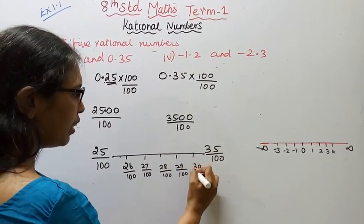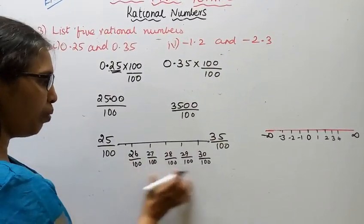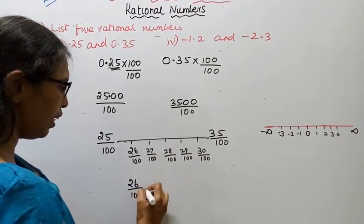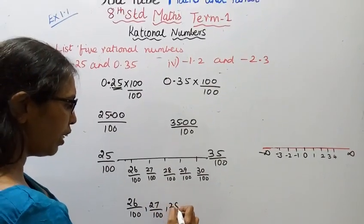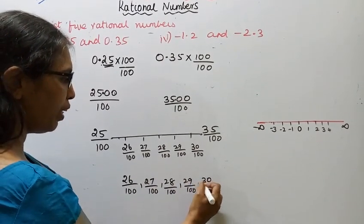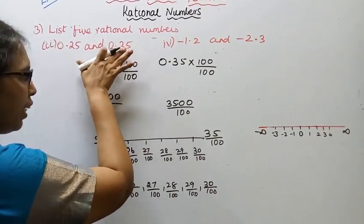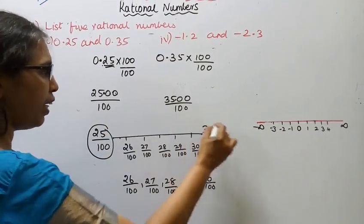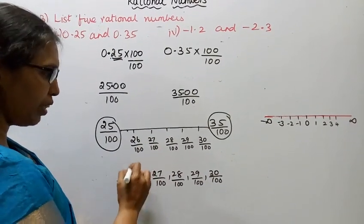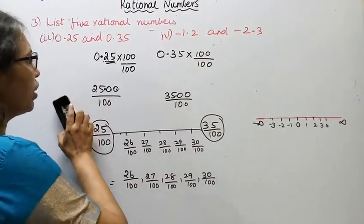In between 25 by 100 and 35 by 100, we list in ascending order: 26 by 100, 27 by 100, 28 by 100, 29 by 100, 30 by 100. So between 0.25 and 0.35, the five rational numbers are 26 by 100, 27 by 100, 28 by 100, 29 by 100, and 30 by 100. This is the answer for the fourth subdivision.